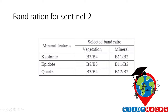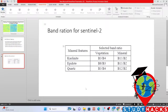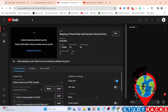Here you can see the band ratios used for Sentinel-2 satellite imagery. For kaolinite, we use the shortwave infrared band 1 divided by band 2. For quartz, we use shortwave infrared band 2 also divided by band 2. We use these ratios to produce the kaolinite and quartz layers for the high-potential density mapping.